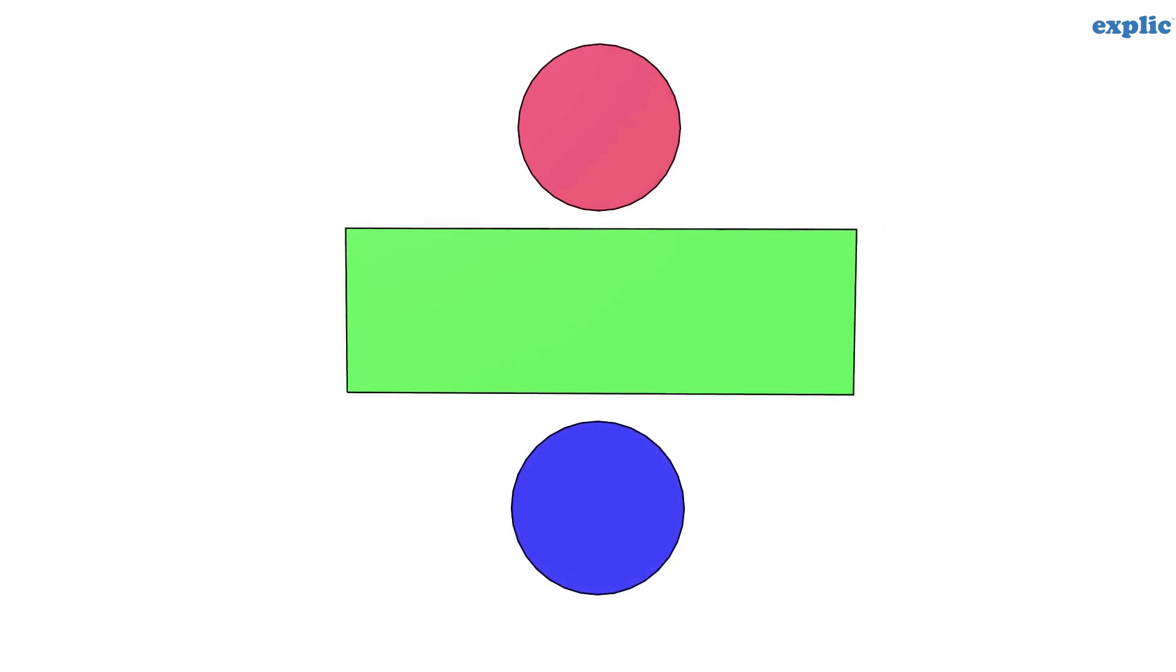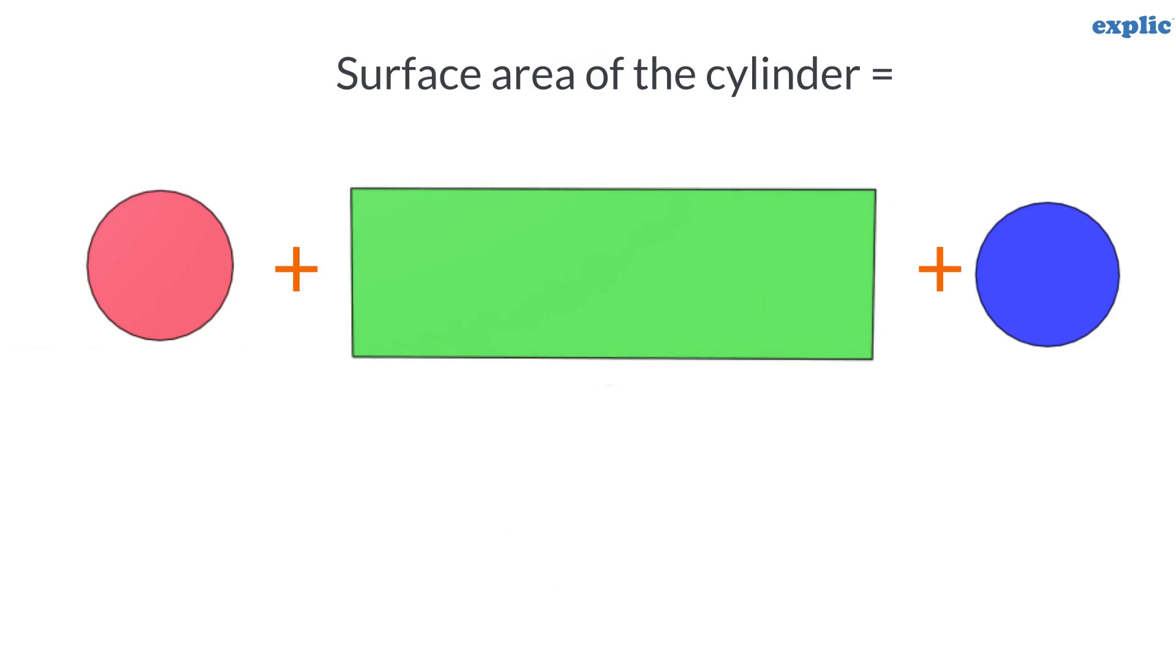Let's find out the surface area of the cylinder. As we know, cylinder is made of two circles and a rectangle. Hence the surface area of the cylinder would be the sum of the area of circles and a rectangle.